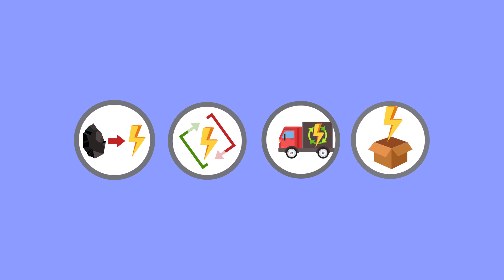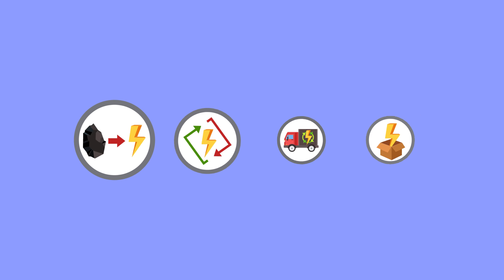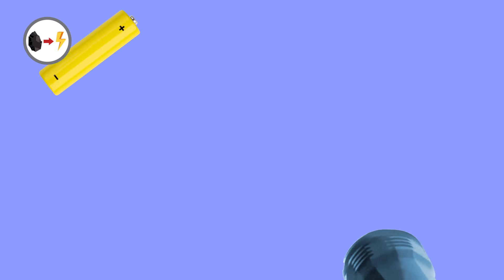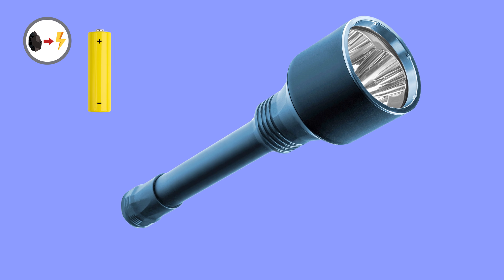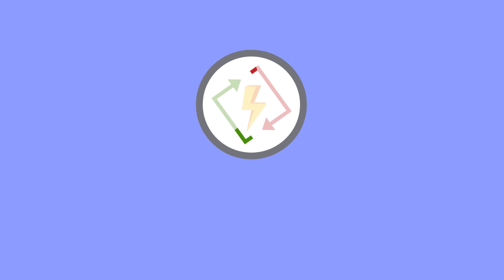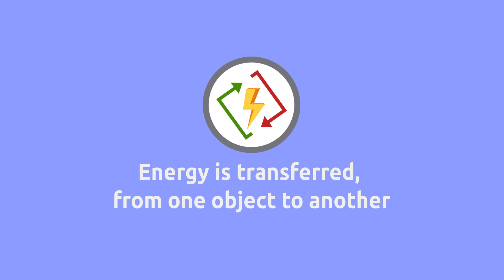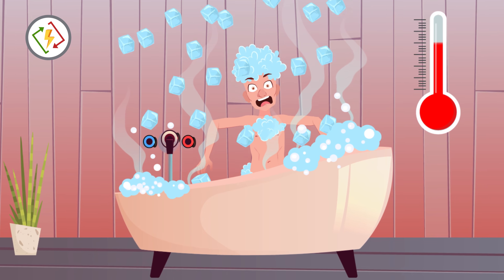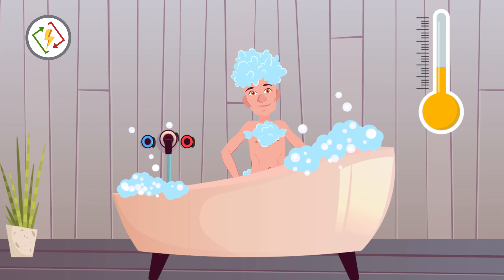Energy transforms. For example, when we use a battery for a flashlight, the chemical energy in the battery transforms into electric energy. Energy is transferred from one object to another. For example, when we mix hot and cold water, thermal energy passes from hot water to cold water.